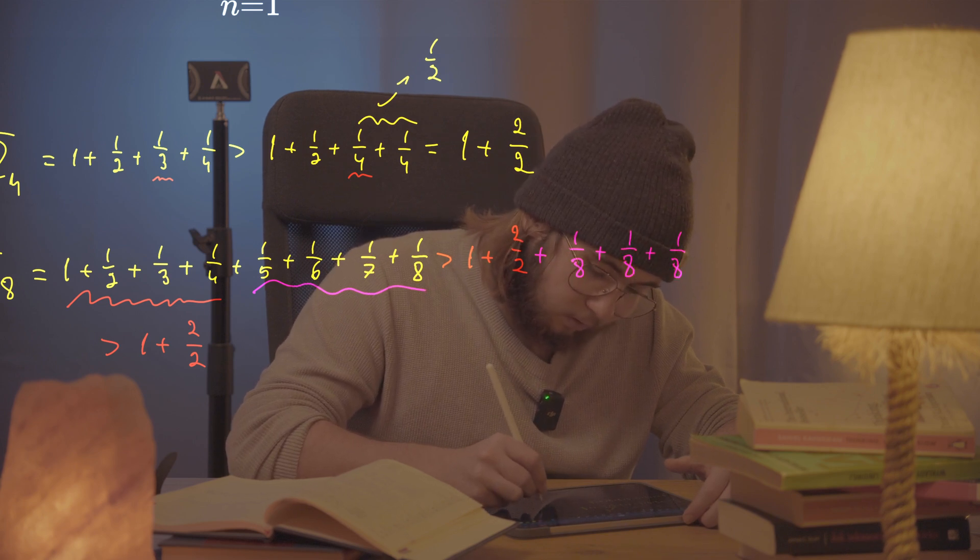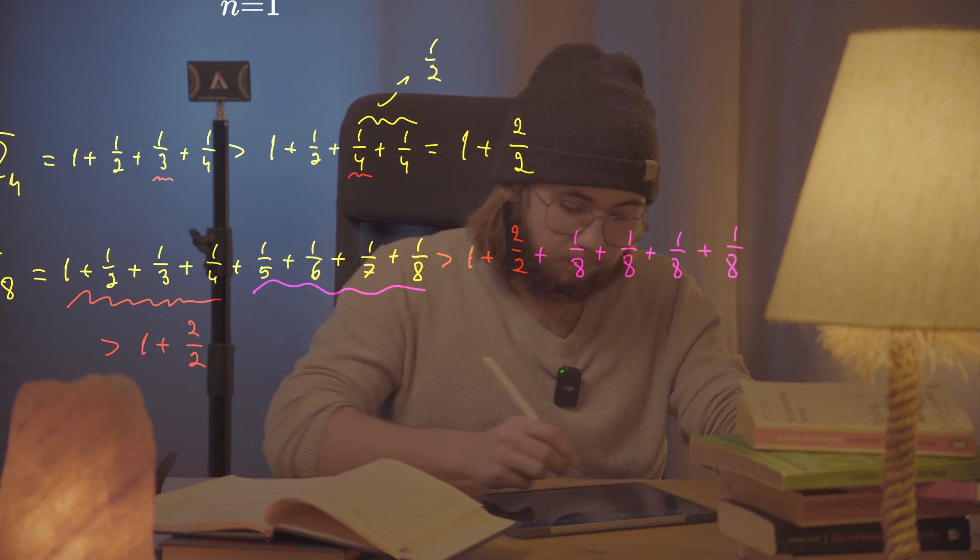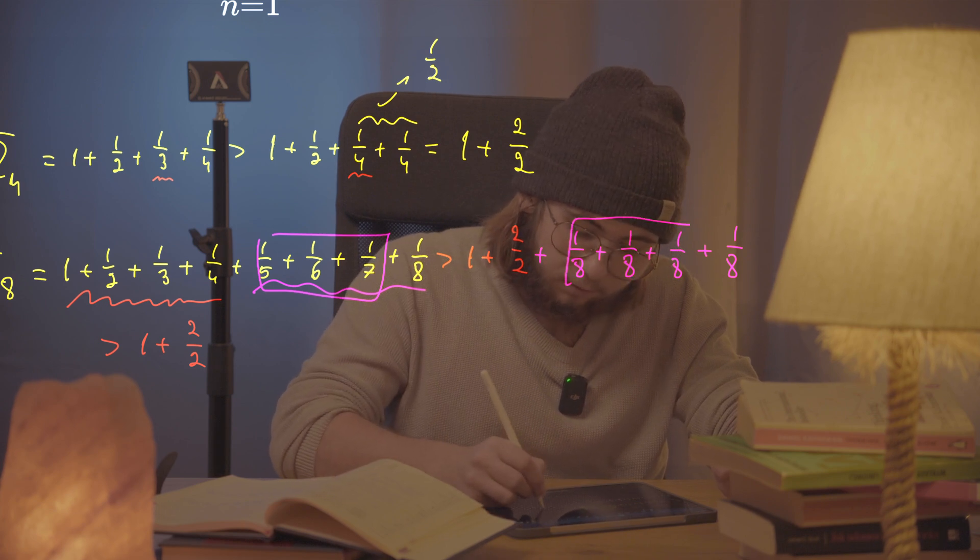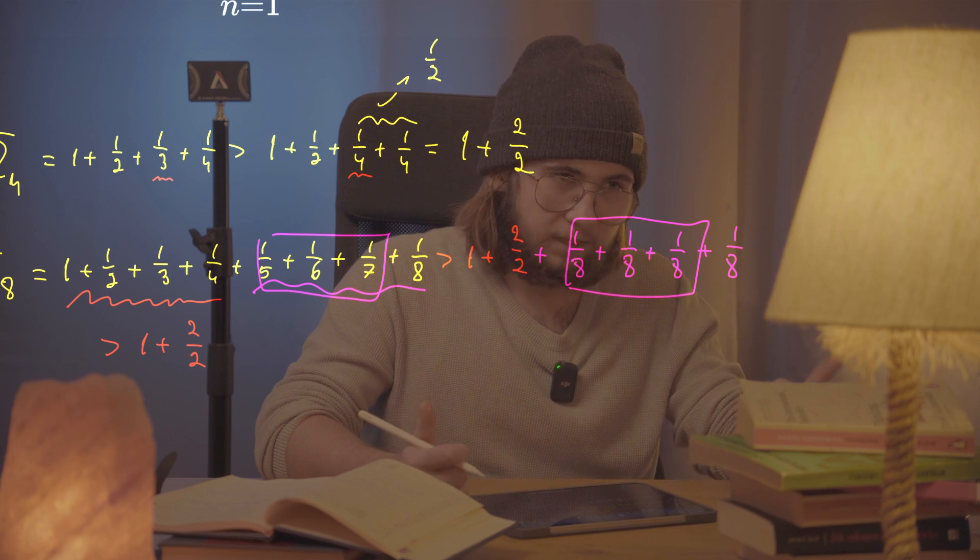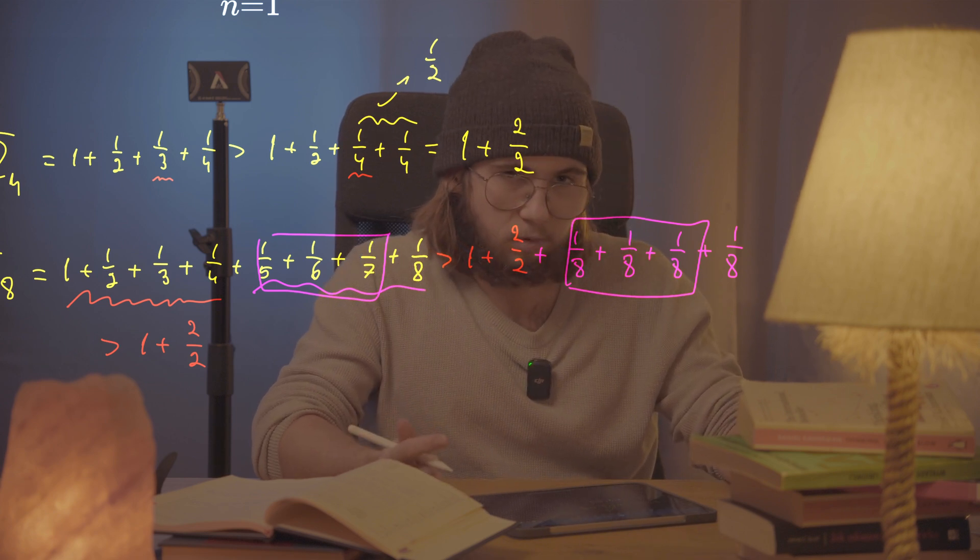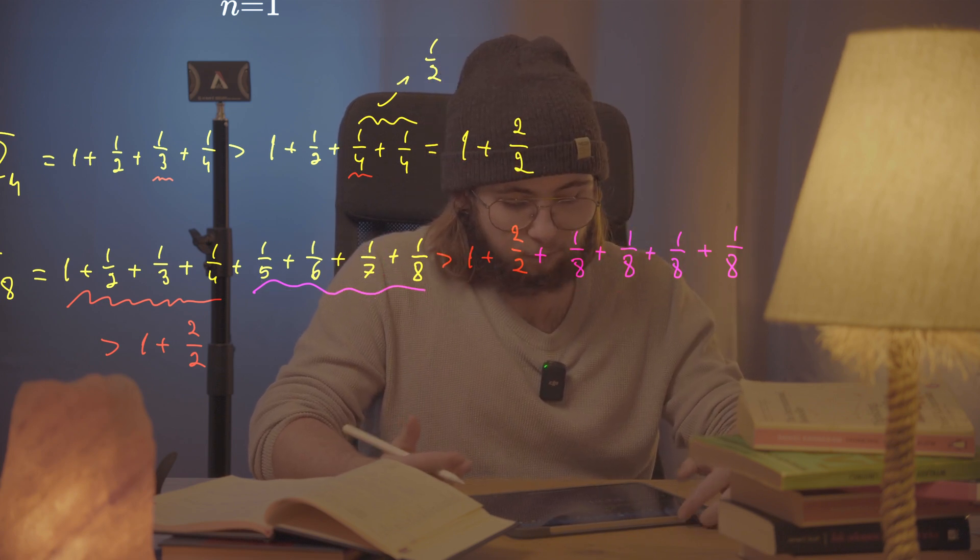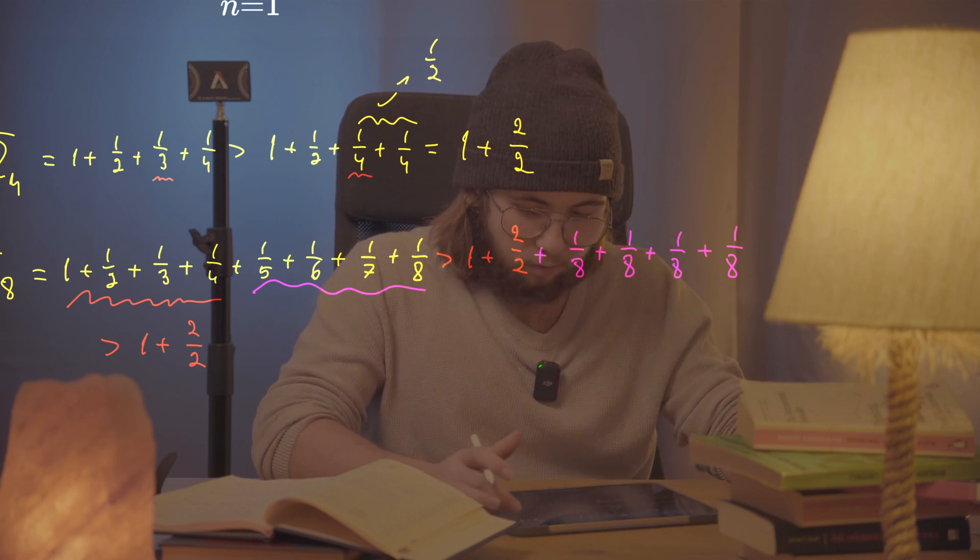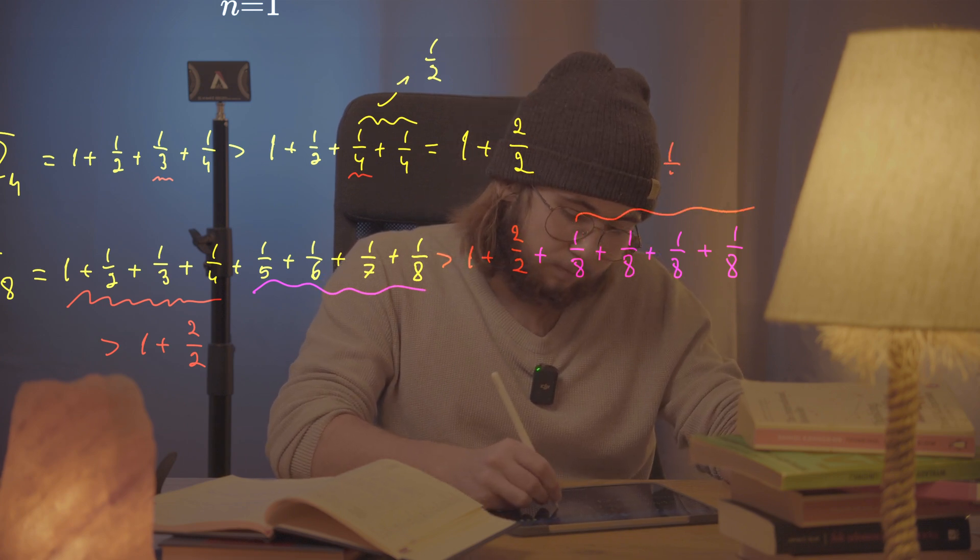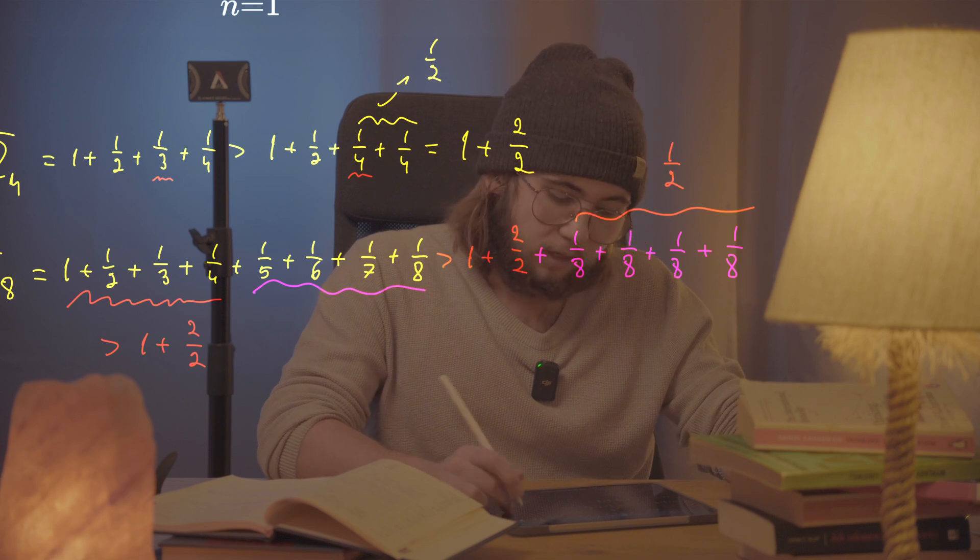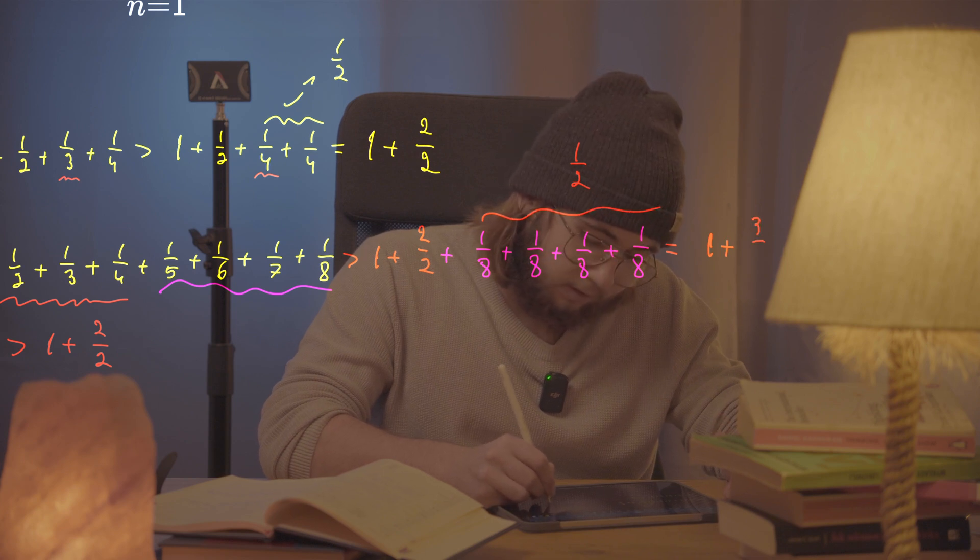What I did there is I just replaced this fifth, sixth, and seventh with three eighths. Well, a fifth is greater than an eighth, a sixth is greater than an eighth, and a seventh is greater than an eighth, so this inequality surely holds. Well, what are four eighths? Those are gonna just sum up to a half. And so what I actually do get here is 1 plus 3 divided by 2, so 1 plus three halves.